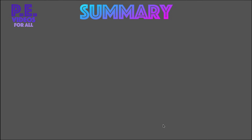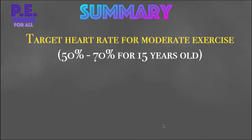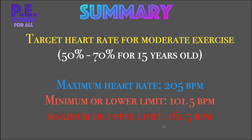Summary: your target heart rate for moderate exercise, that is 50% to 70%, for a 15-year-old. Your maximum heart rate is 205 beats per minute. Your minimum or lower limit is 101.5 beats per minute, and your maximum or upper limit is 161.5 beats per minute. Meaning, during exercise, your heart rate should be between 101.5 to 161.5 beats per minute.